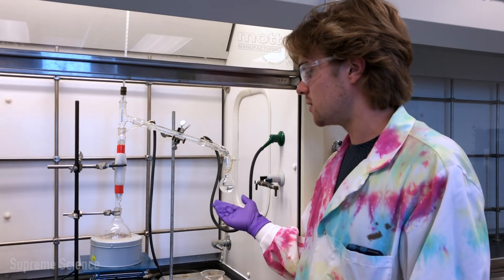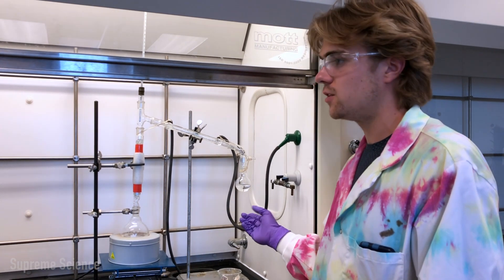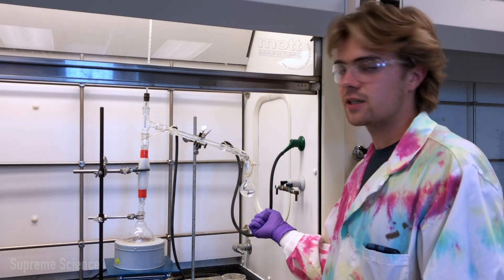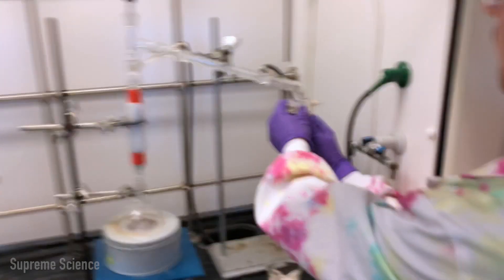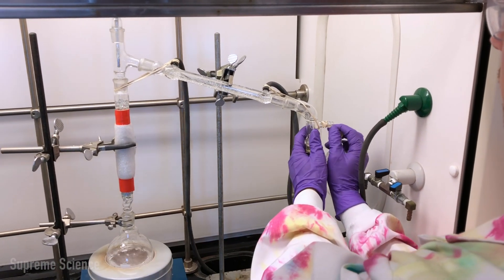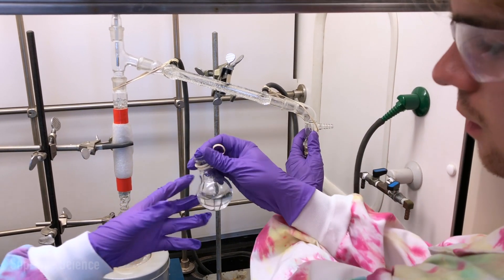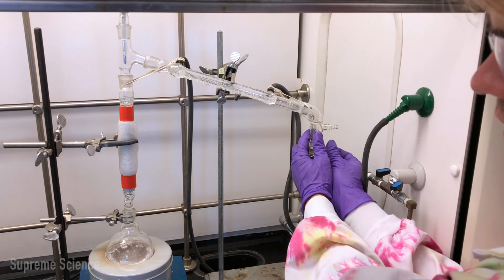Now we have our ethanol collecting in our receiving flask and we're almost ready to switch to fill our next fraction. Very quickly remove our old receiving flask and put the new one on, and we can put that in a beaker.